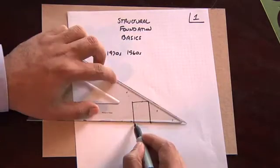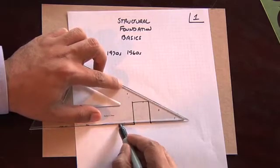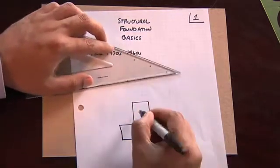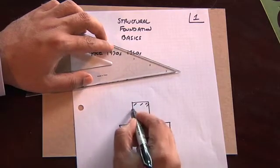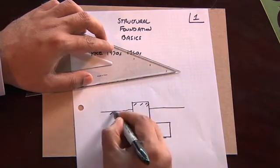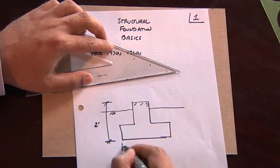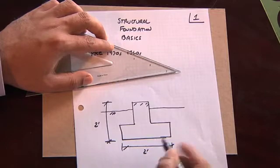We had what's called a raised floor foundation system. And a raised floor foundation system consists of a footing, which is normally say two feet deep, with a base, which is approximately two feet.